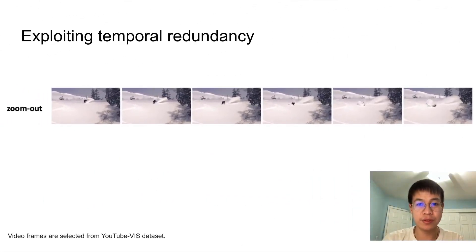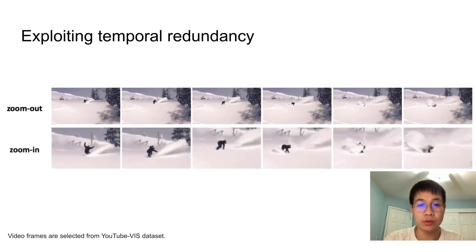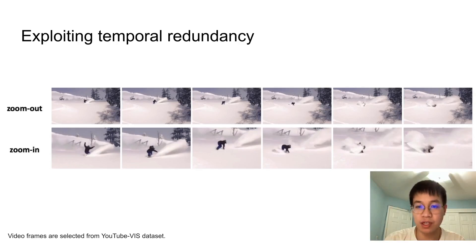Our second contribution is exploiting temporal redundancy. We take a video clip from the YouTubeVIS dataset and as we can see, the scene does not vary too much across different frames — the snow and trees all look quite similar. A fairly straightforward idea is that we can transform features from previous frames to the current frame to save computation. However, when we zoom in, we find that the person is actually stretching out with different poses across frames, suggesting that simply transforming features from other frames might not give us precise enough features for predicting high-quality masks.